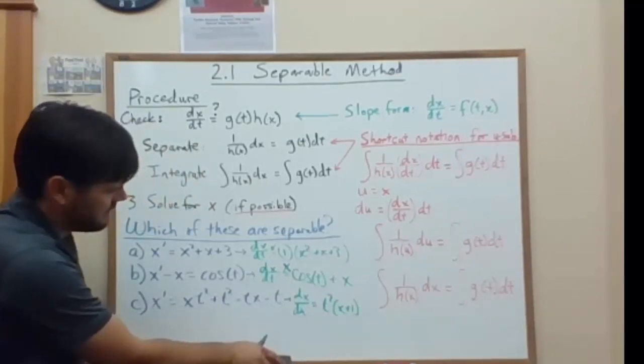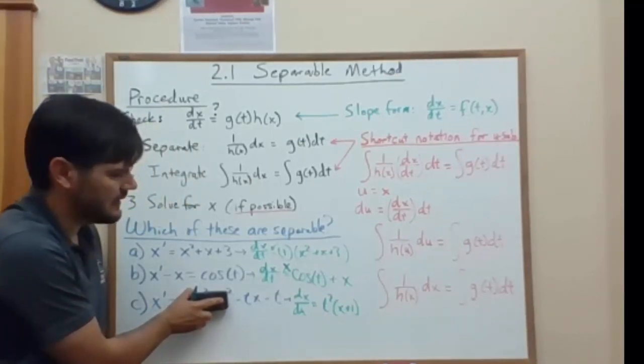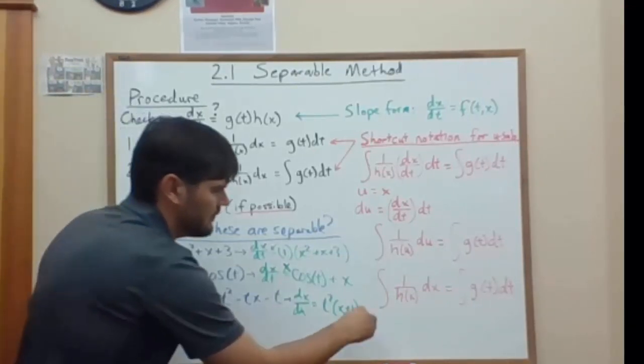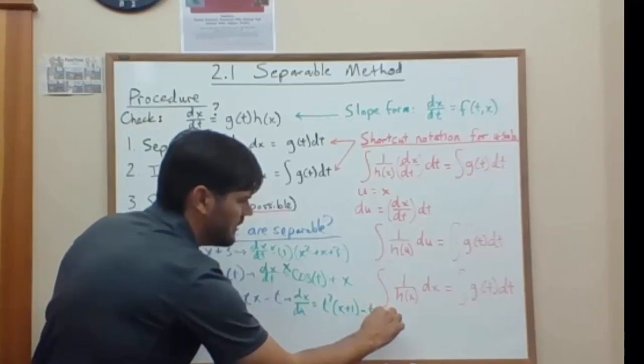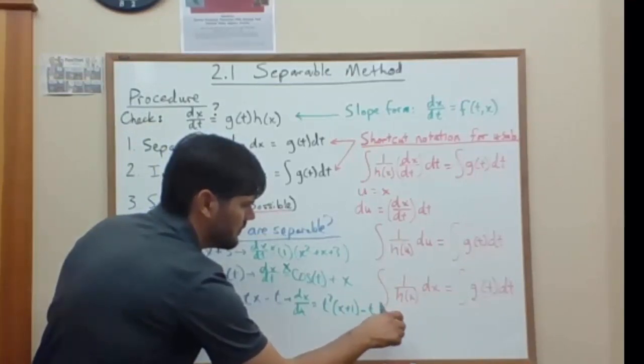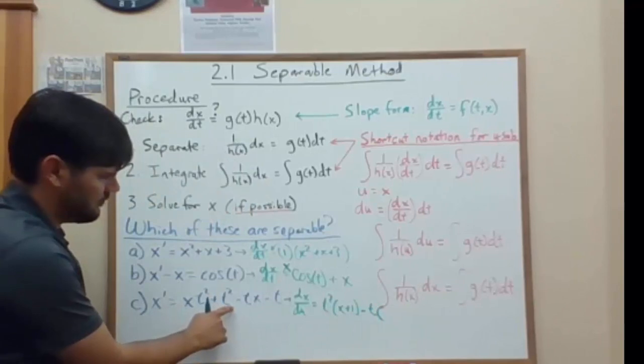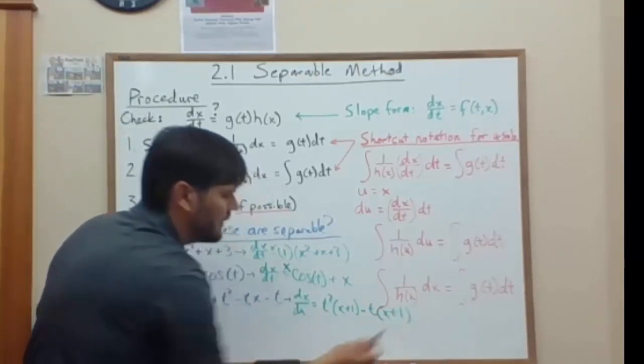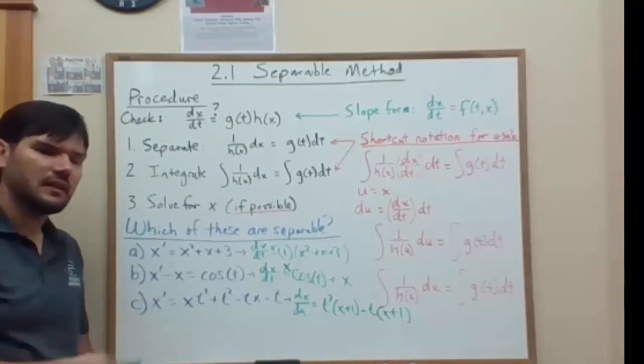And then we have a minus tx minus t. Now we can separate that sum into a minus t times x plus one.